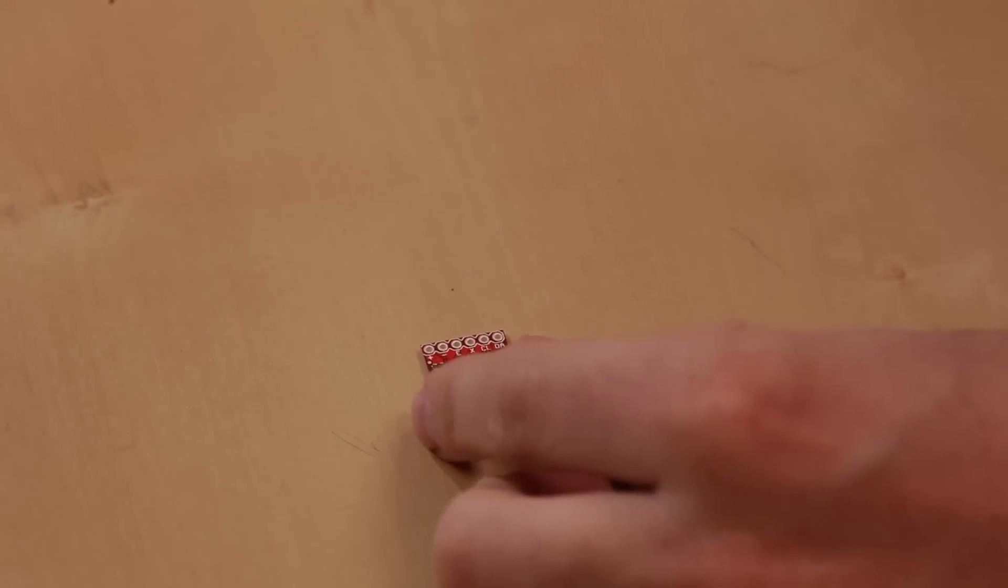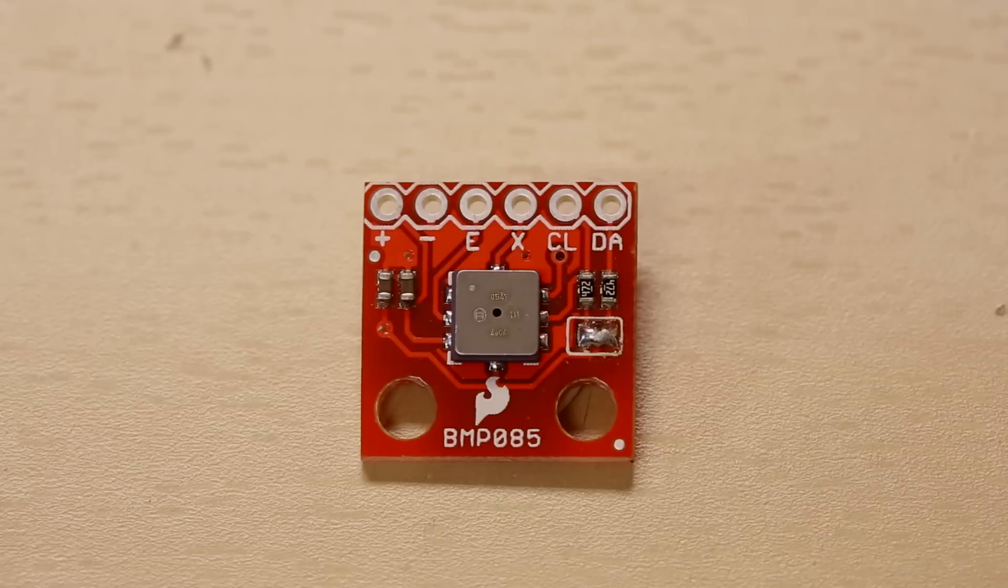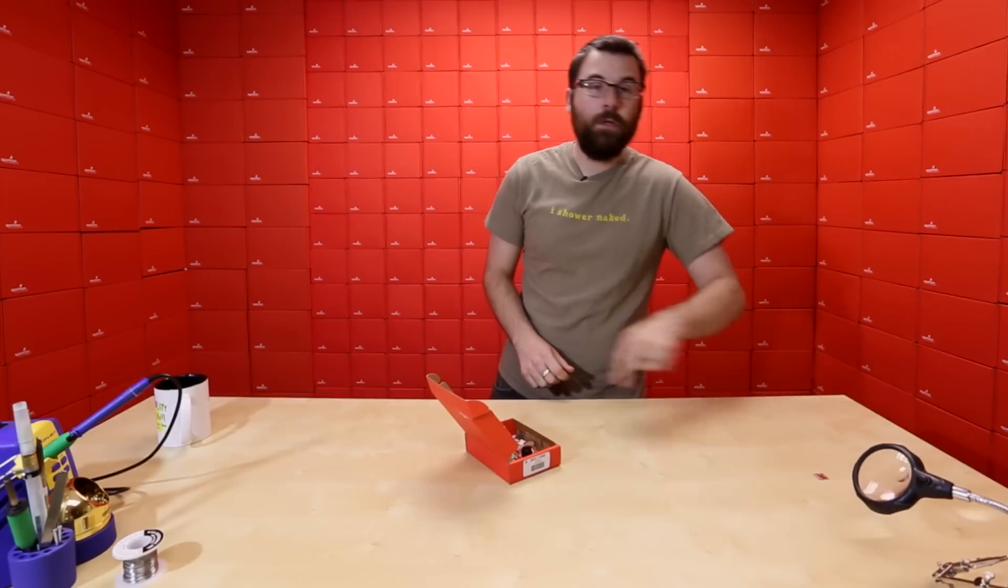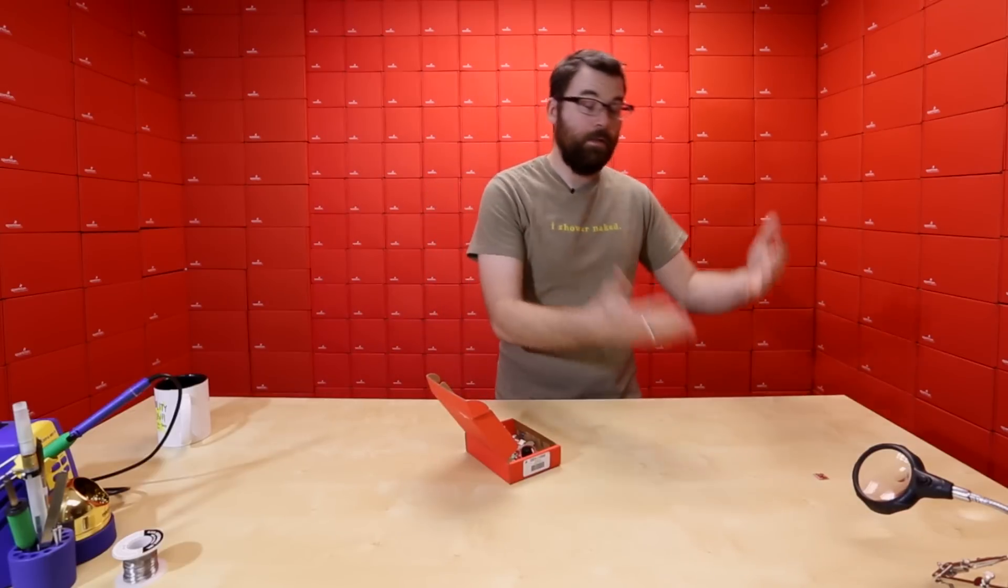So first up, we've got this little guy. This is the BMP85. The BMP85 is a barometric pressure sensor, and it has a simple I2C interface. You can hook it up to your microcontroller and easily detect the barometric pressure.